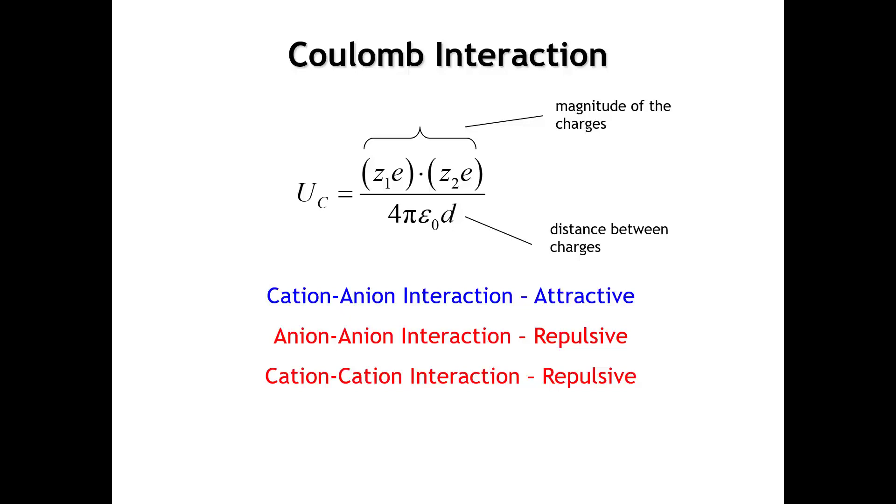We can see a few things from this simple equation. If we have a cation and an anion, one has a positive charge, one has a negative charge, so the energy is negative - it's attractive. If the charges are the same, either anion-anion or cation-cation, then this term becomes positive. We have a positive energy, meaning the ions are repelled from each other. If we put two cations close together, they're going to move away from each other, decreasing the energy until the energy goes to zero.